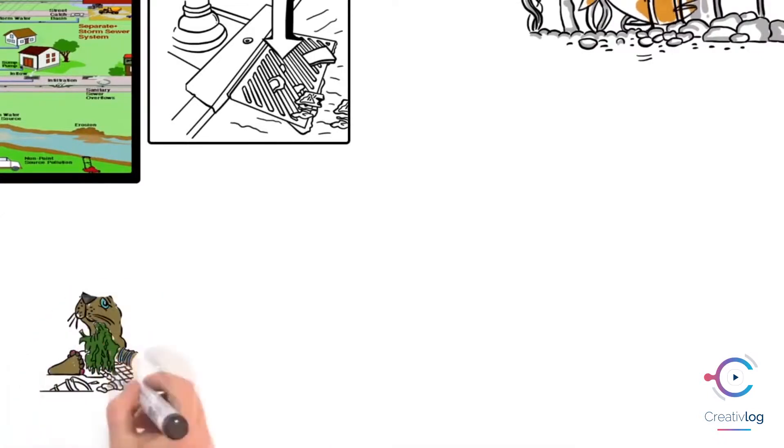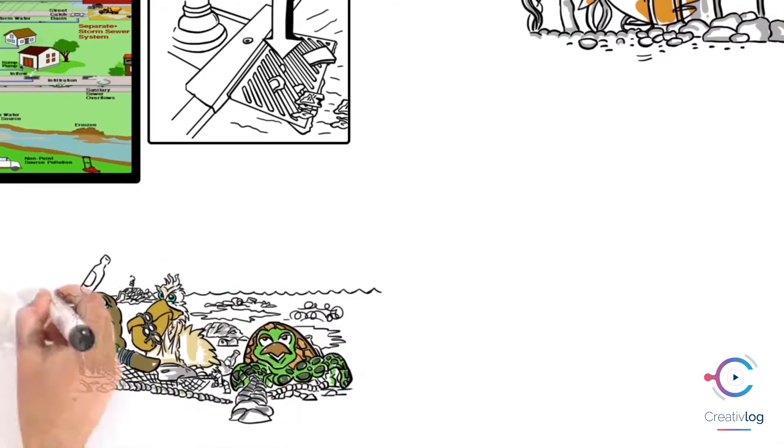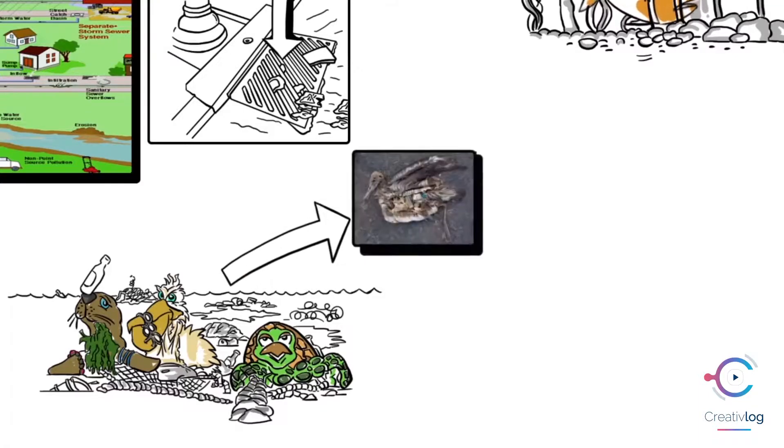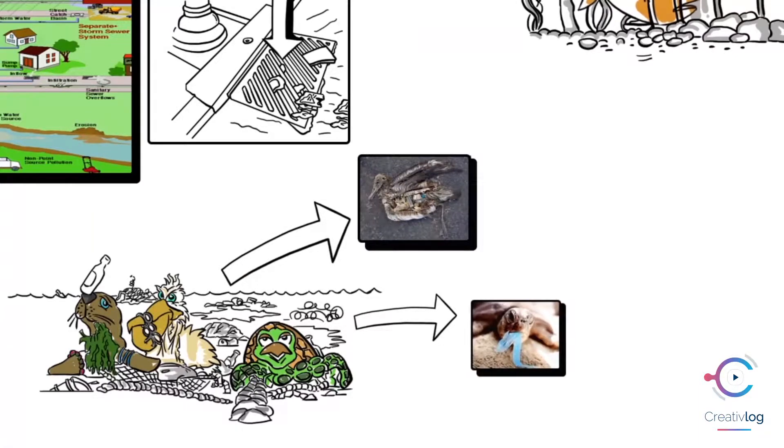Waterfowl and other wildlife also suffer from the effects of littering. It may take years for even the smallest item to decompose, inflicting serious damage on the environment in the process.